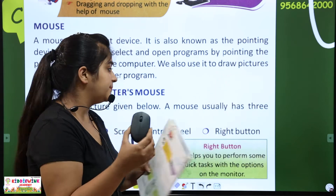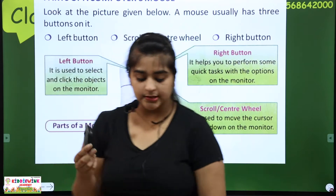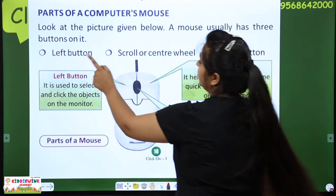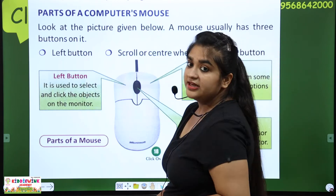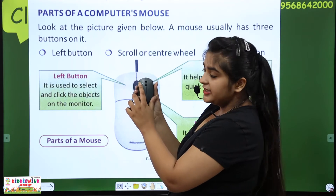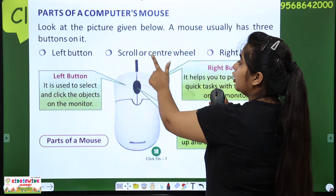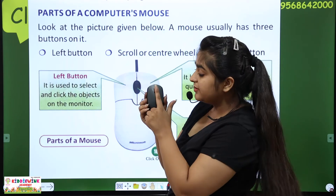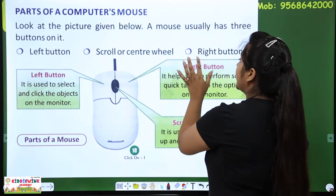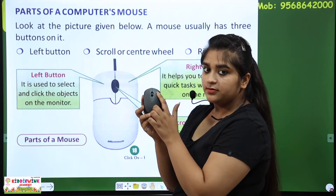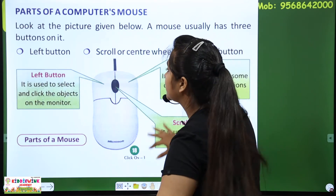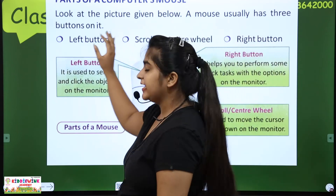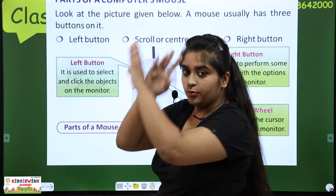Now comes the parts of a computer's mouse. Look at the picture given below. We have the right button on the right side, it is called the right button. Left button — it is used to select and click the objects on the monitor screen.